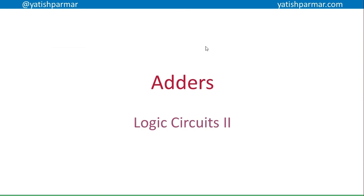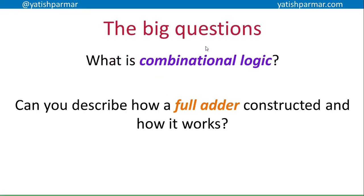Mr. Palmer here - second video in the logic circuits series for A2 / Year 13. This one is about adders. We're looking at what combinational logic is and how a full adder is constructed and how it works. Make sure you're clear on your logic gates and truth tables: XOR, NAND, OR, AND - know the truth tables for all of them inside out. I'll also be going through diagrams on half adders and full adders - make sure you can reconstruct those diagrams from scratch.